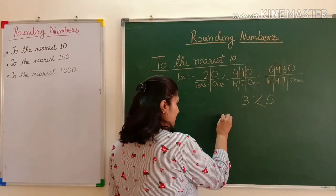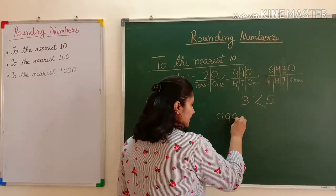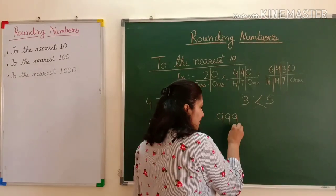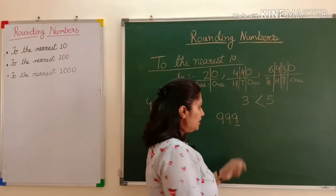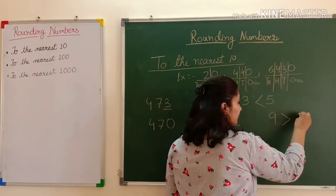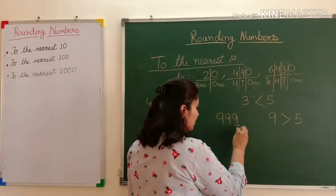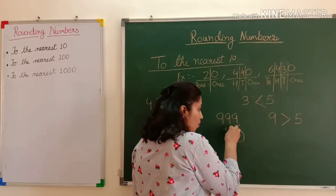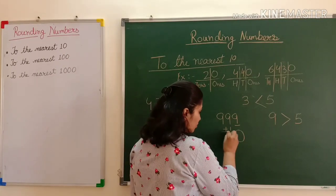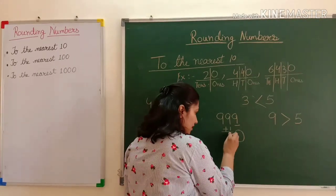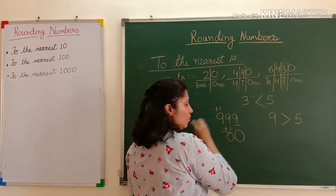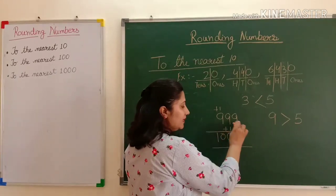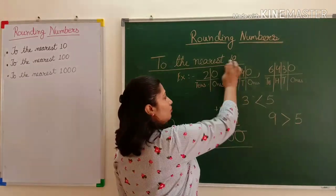Let's take one more example: 999, the largest three-digit number. The ones place digit is 9, which is greater than 5. I put zero in the ones place and add one to the tens digit: 9 plus 1 is 10, so I write 0 and carry 1. Adding 1 to the hundreds digit: 9 plus 1 is again 10. So the rounded number of 999 to the nearest ten is 1000.